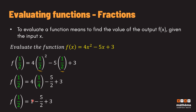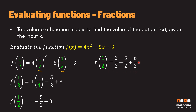Simplifying further: four divided by four is just one, so we have 1 minus 5/2 plus 3. Now we need to combine like terms. Since we are dealing with fractions, note that 1 can be expressed as 2/2, and 3 can be expressed as 6/2. The goal is to make all the denominators the same number so we can perform the operations.